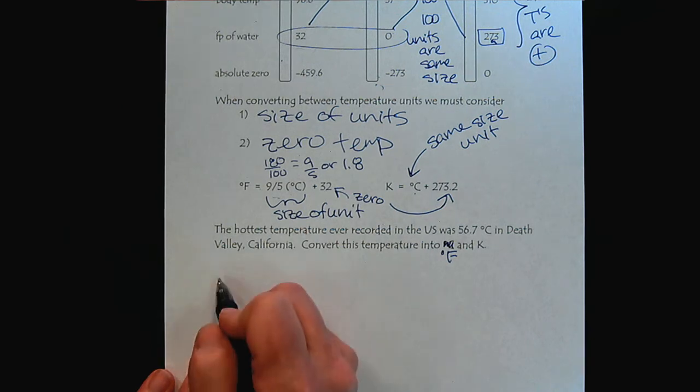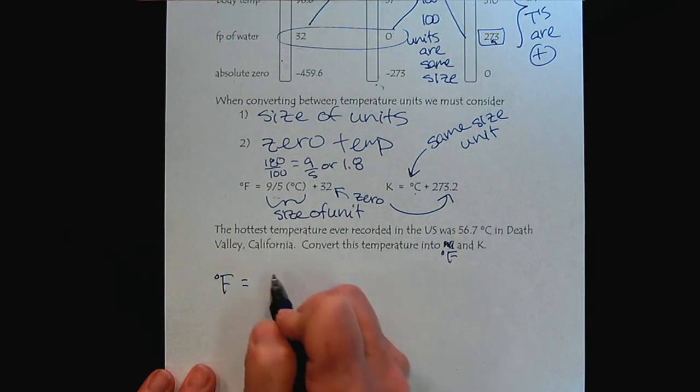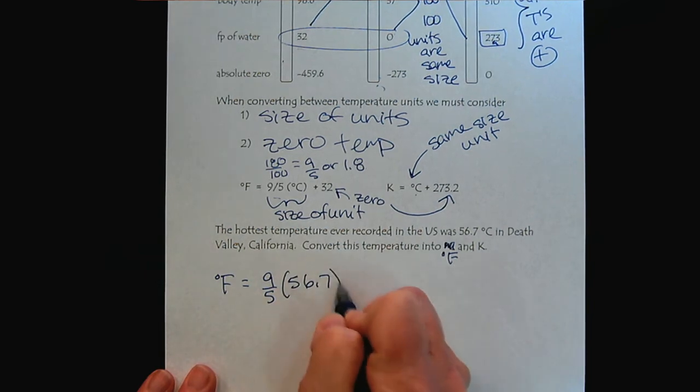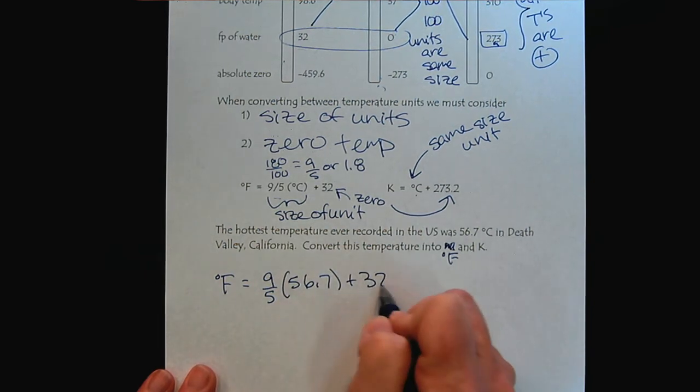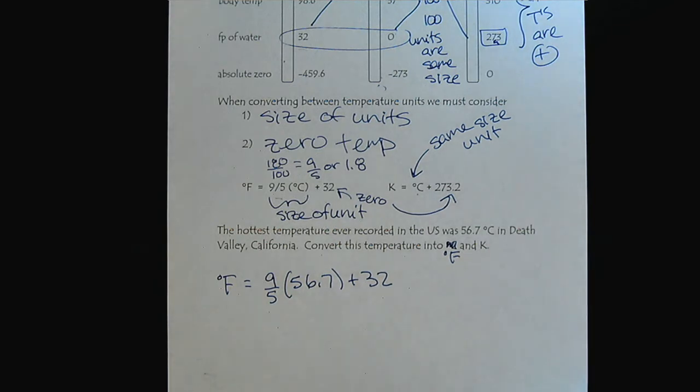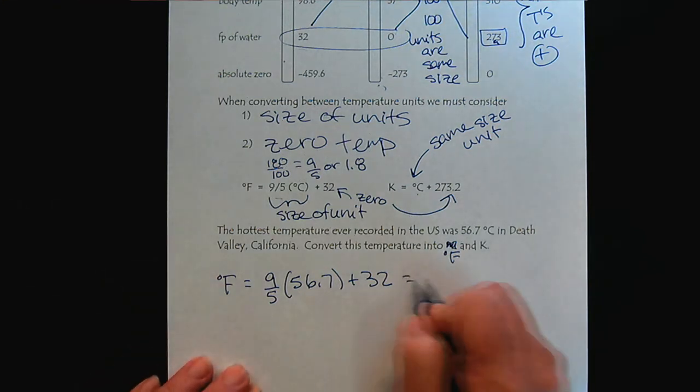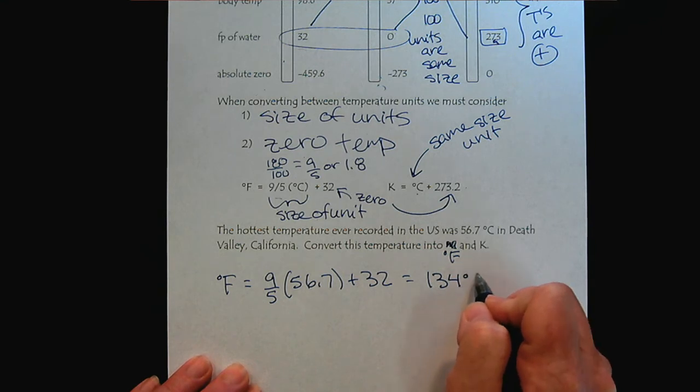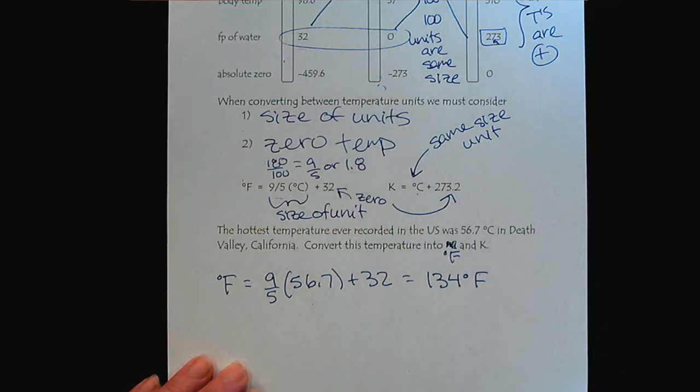For degrees Fahrenheit, it will be 9/5 times 56.7 plus 32. We put these values into our calculator and we get 134 degrees Fahrenheit. Wow, it's an amazingly hot day.